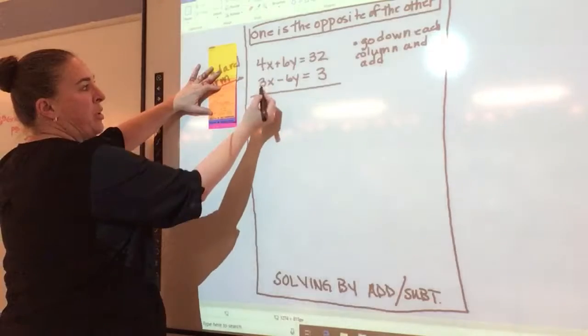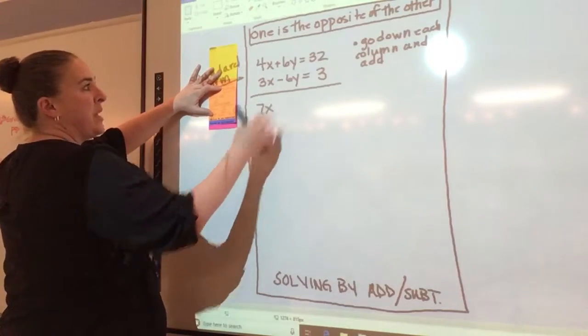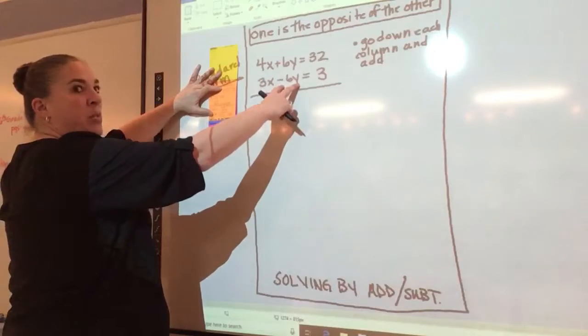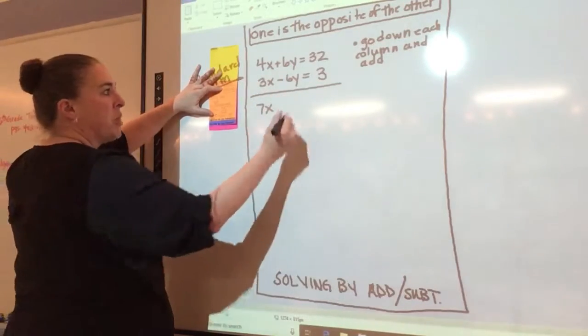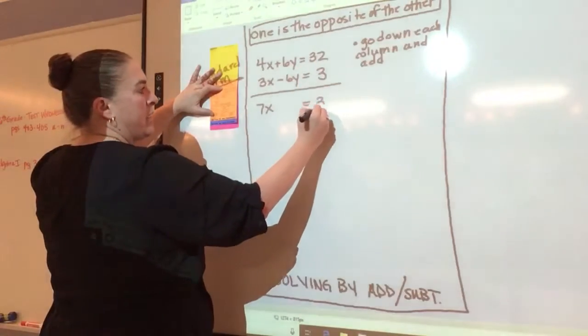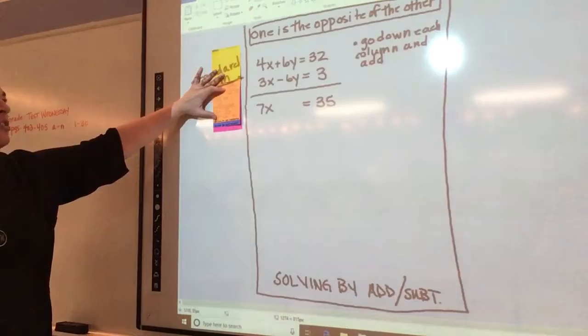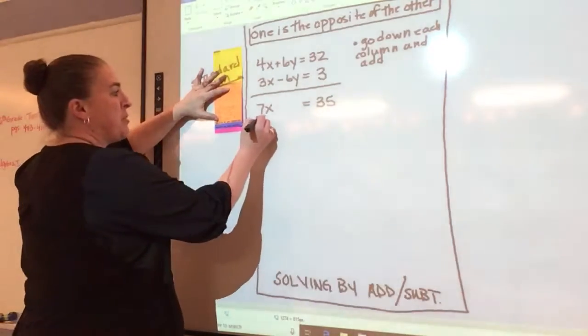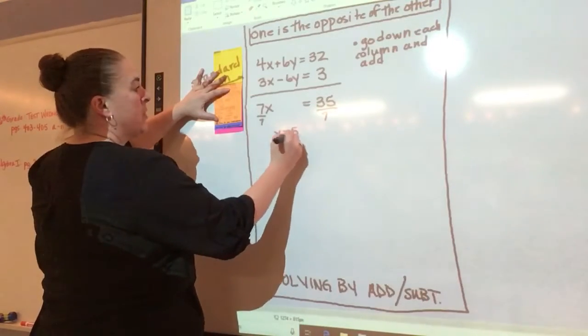So if I add 4x plus 3x, what do I get? Yes, 7x. And negative 6y, or 6y and negative 6y, goes away. And then 32 plus 3 is yes, 35. Now I eliminated one variable. This is why they call it elimination. It just went away. So now can I solve for x? Yeah. So I divide both sides by 7, I get that x is correct, 5.